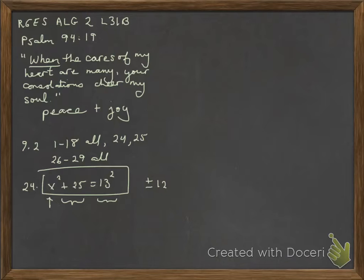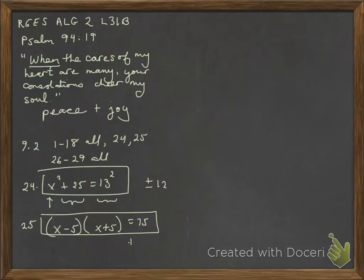25 says when 5 is taken away from a certain number and also added to it, the product of these, multiplying them together, is 75. So there's my equation. When you solve it, the answer should be plus or minus 10. Moving on to 26 through 29.